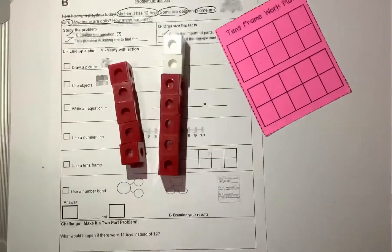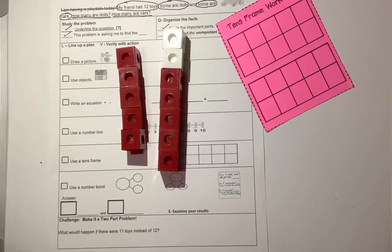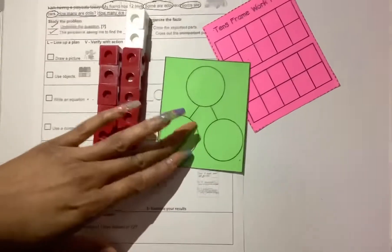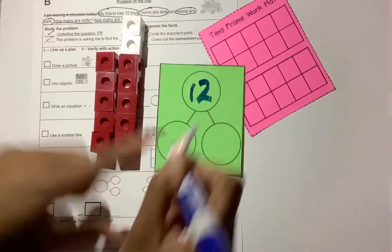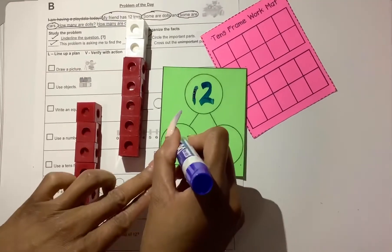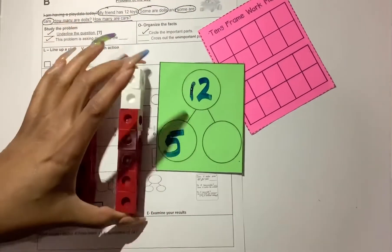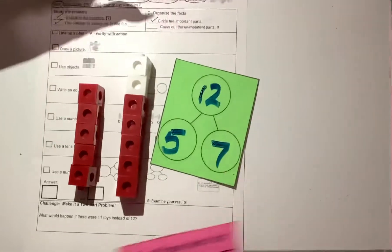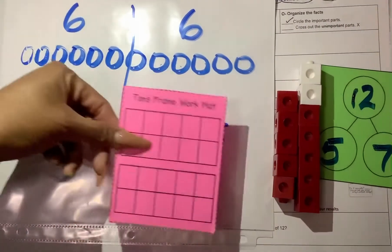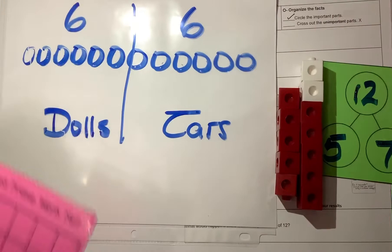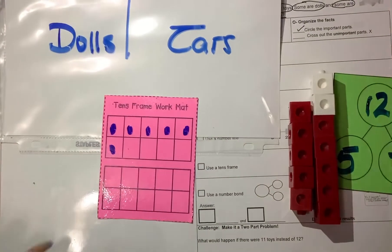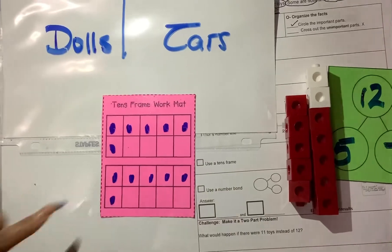Let's use the objects to show our number bond. So our whole is 12. There's 12 toys. These are my dolls. I have 5. And these are my cars. I have 7. If I showed my first combination of 12 using the 10 frame, I would draw 6 for one part and then 6 for another part.